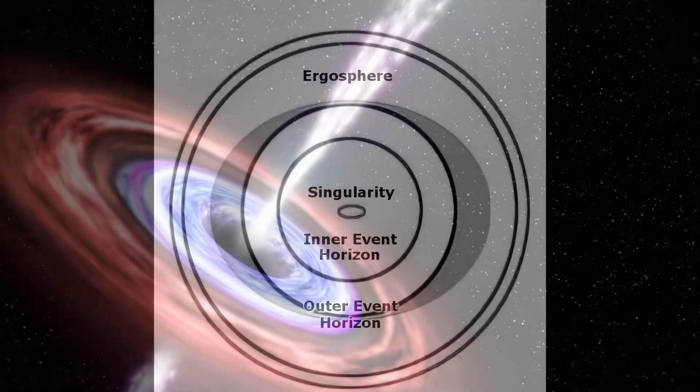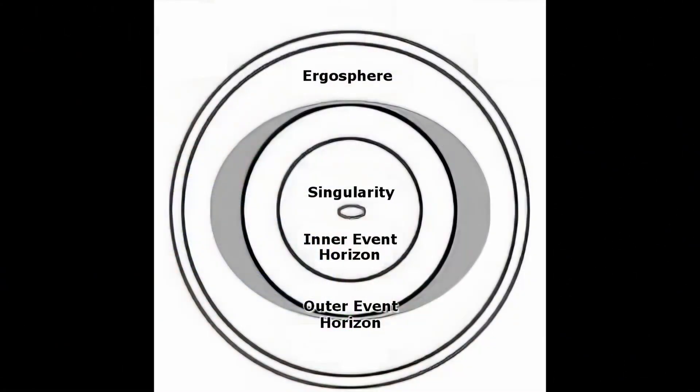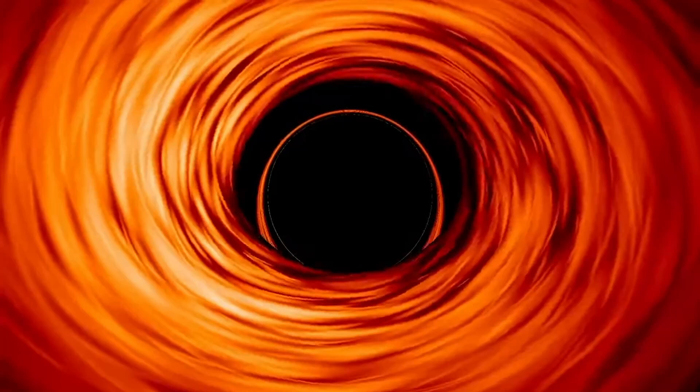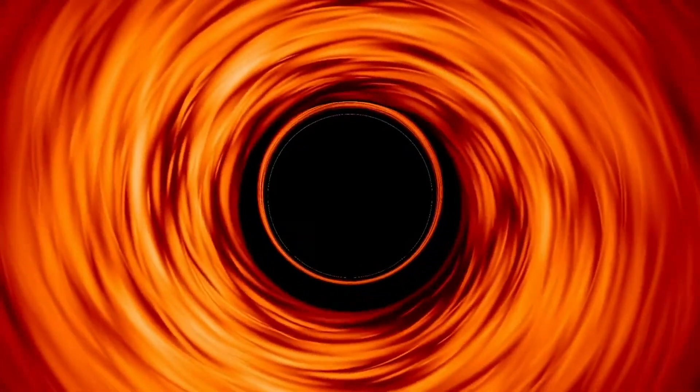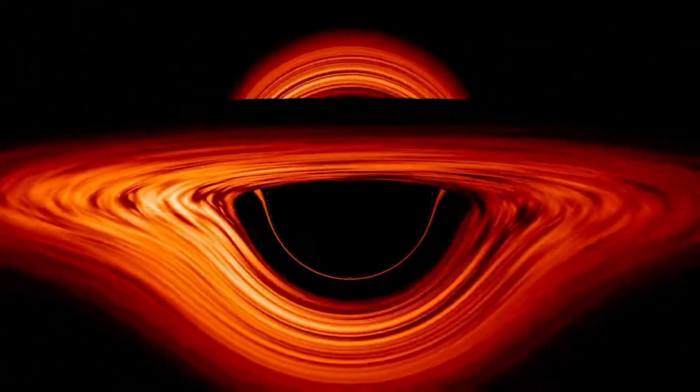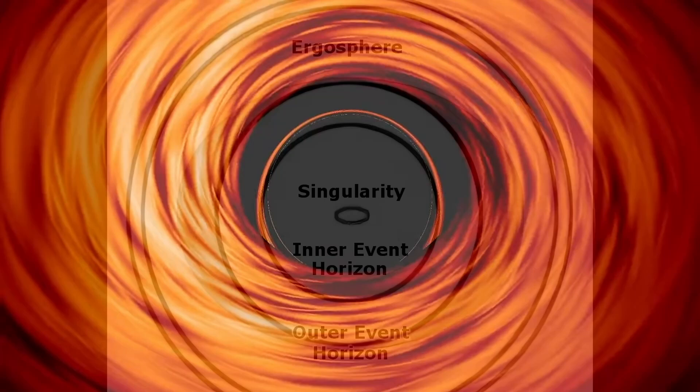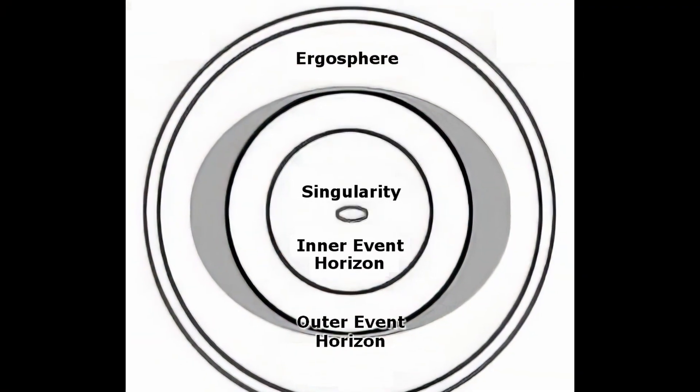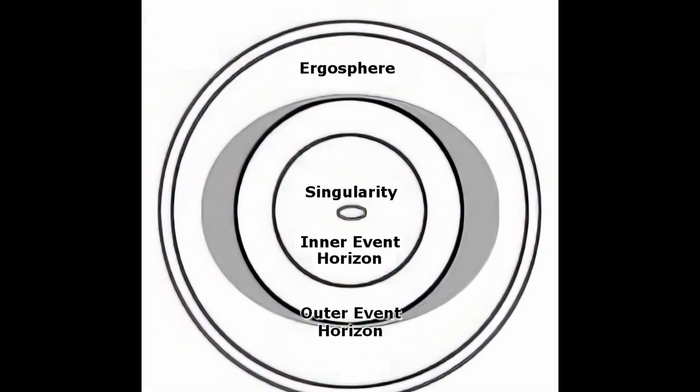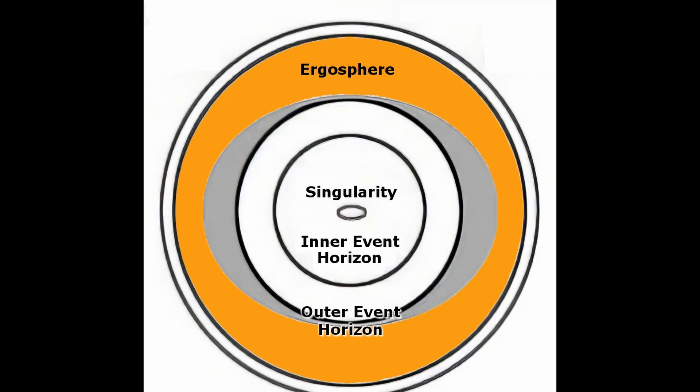The ergosphere of a black hole is a region that surrounds the event horizon, and the event horizon is the point of no return, the point where the gravitational pull of the black hole is so strong that nothing, not even light, can escape. The ergosphere, however, is not a point of no return, but it is a region where the laws of physics are drastically different from those of the outside universe.